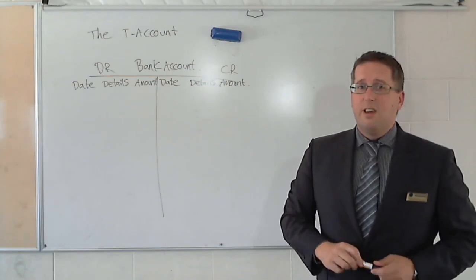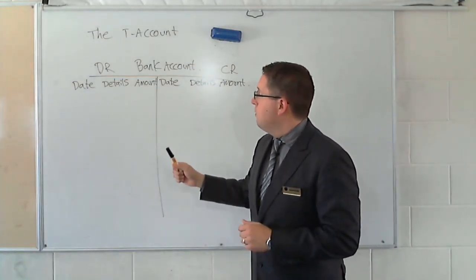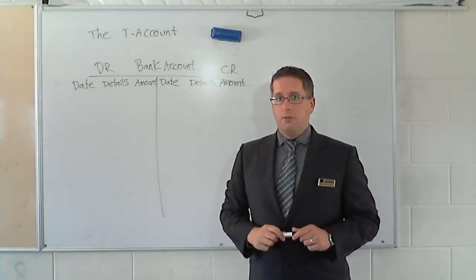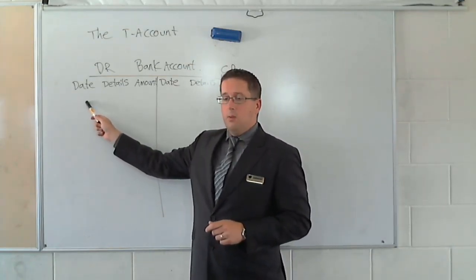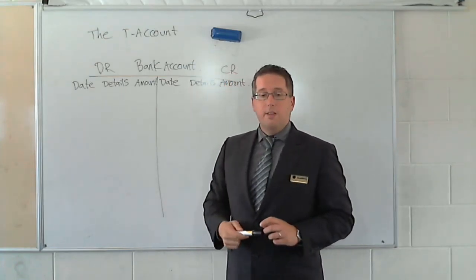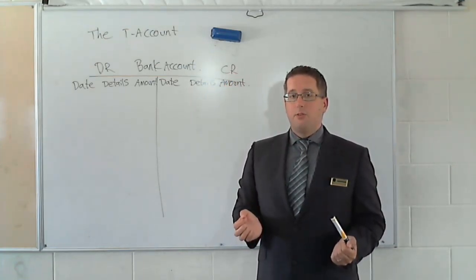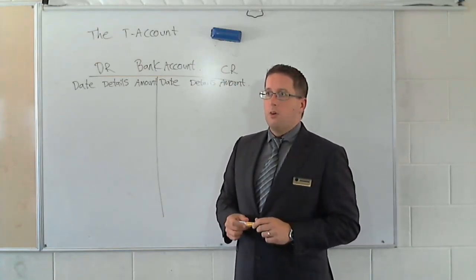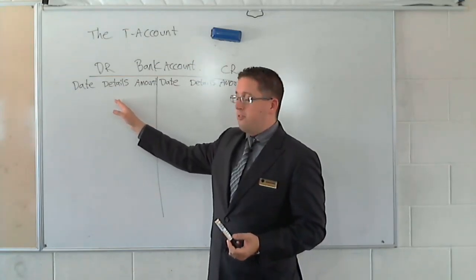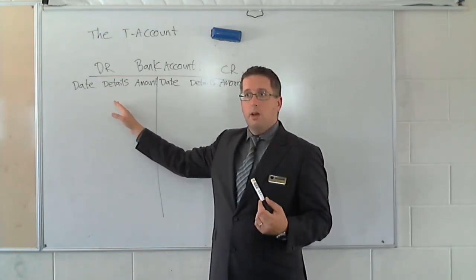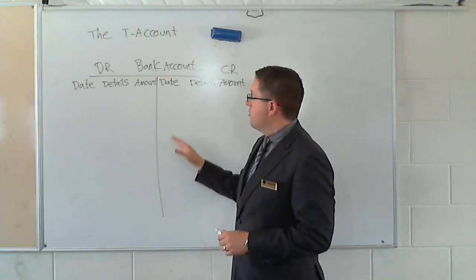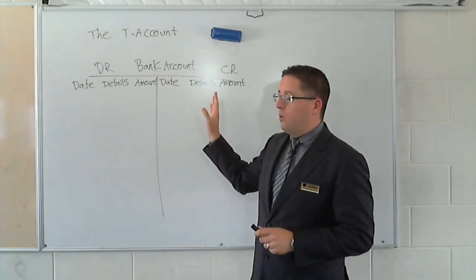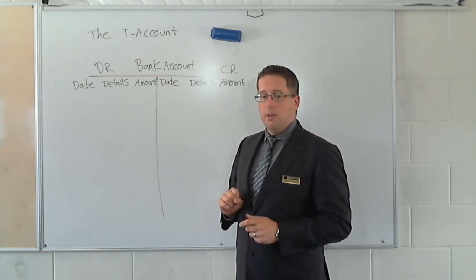Now, we get into a bit more detail though. So, when we record transactions, we want to record the date that it happens. So, that would be the first thing that we record here. The next part is we want to record the details. What's the details of the transaction? So, if we've made a sale, maybe we would write sales. That it's money coming in from sales. We want to say that we've paid out some wages. We'd write wages. We'll come into a bit more of that detail later.